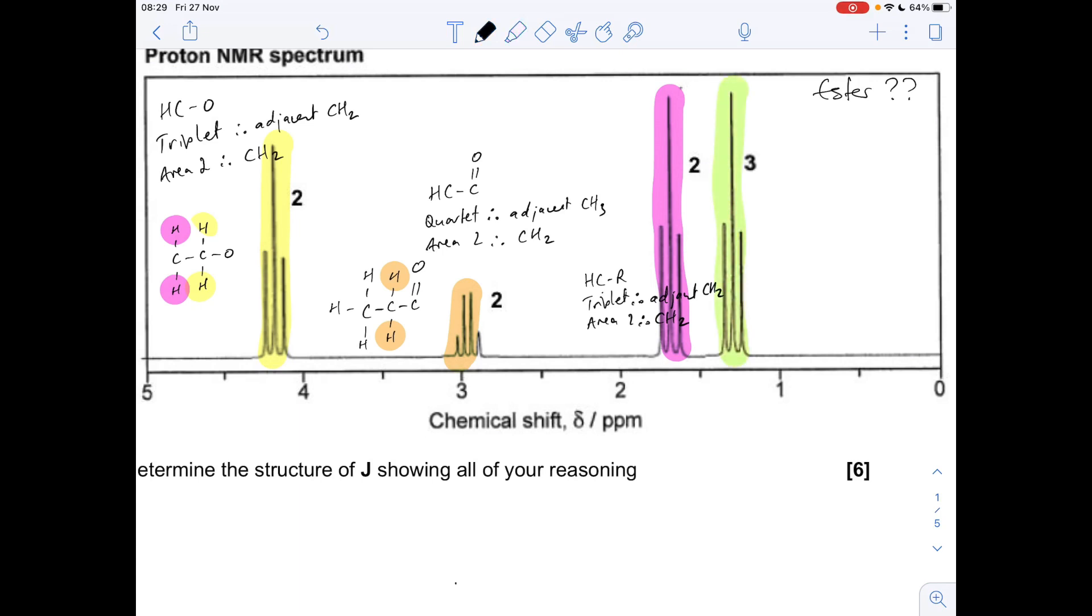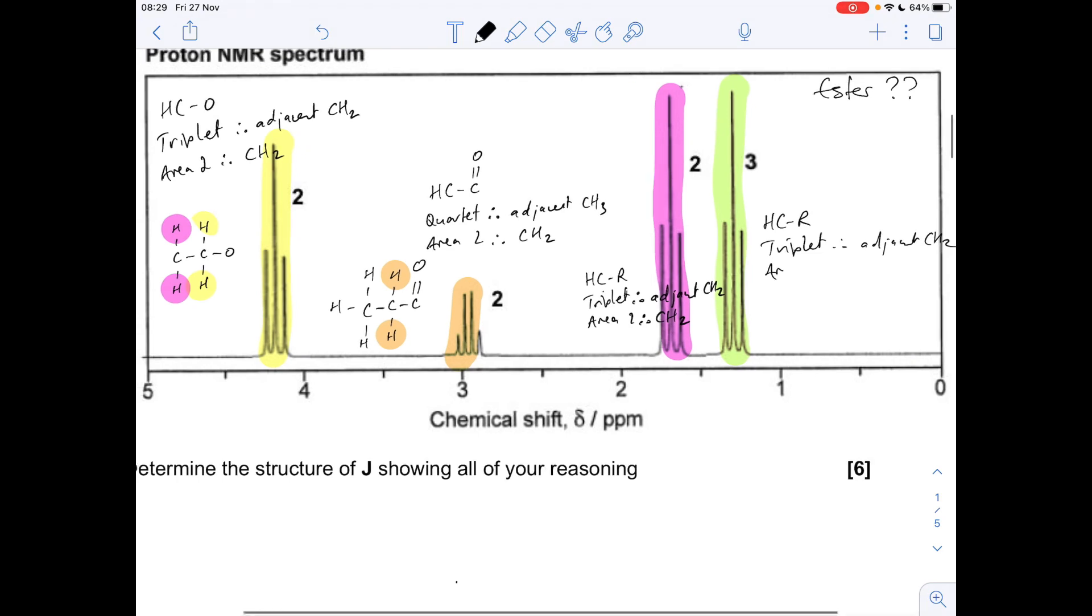The final signal, the one I've done in green, is HCR because of its shift value. Another triplet, therefore adjacent to CH2, area three, so it's been caused by a CH3 group. To me that's looking like it's those there because they are in the HCR environment, adjacent to two, but there's three in the environment.